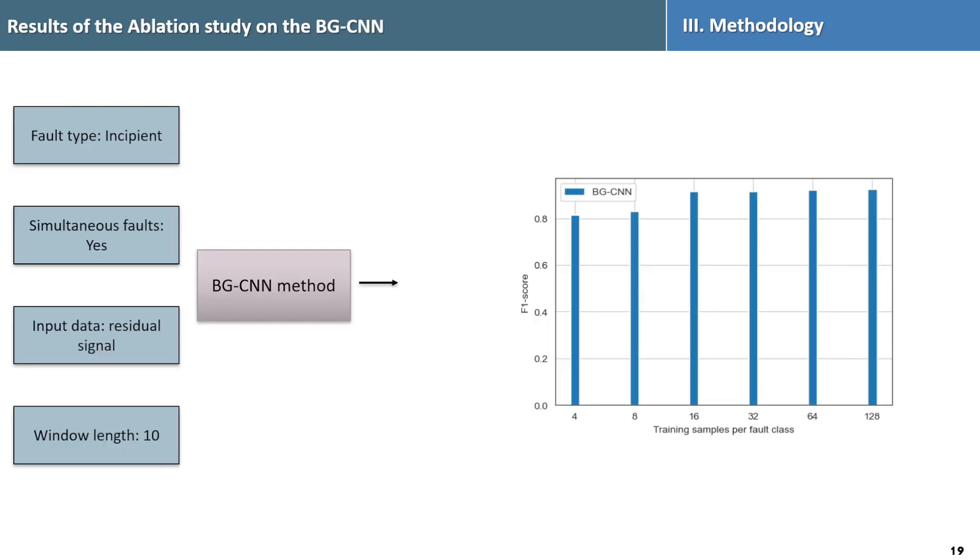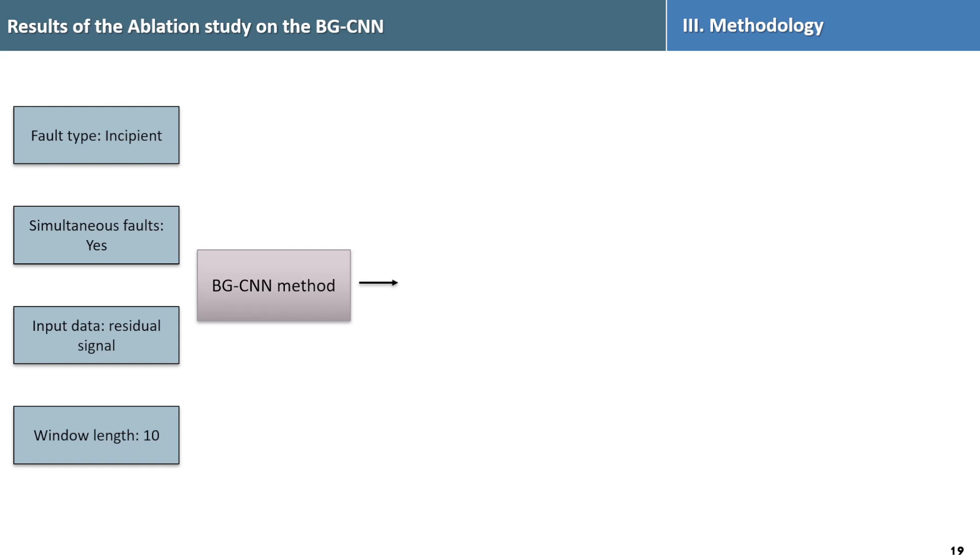We conducted also an ablation study for BG-CNN method, isolating individual parameters to understand their impact on accuracy. It is mainly affected by following four parameters: type of fault, presence of simultaneous fault, type of input data, and size of the window length.